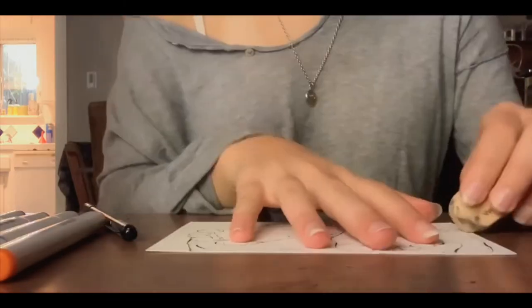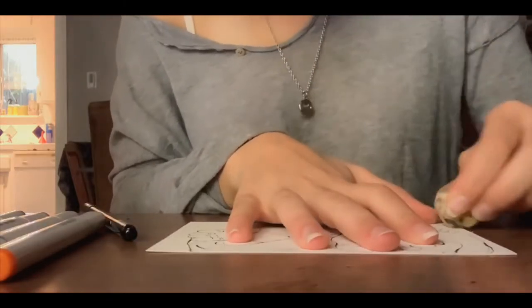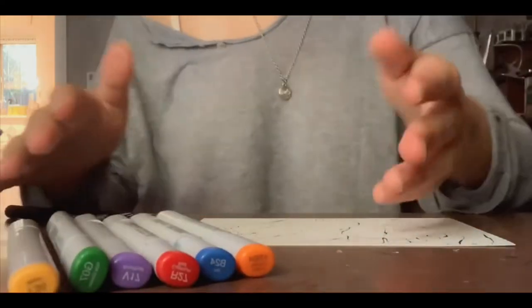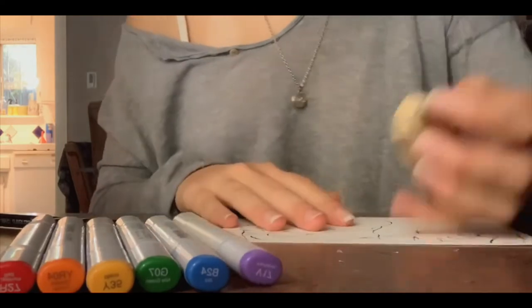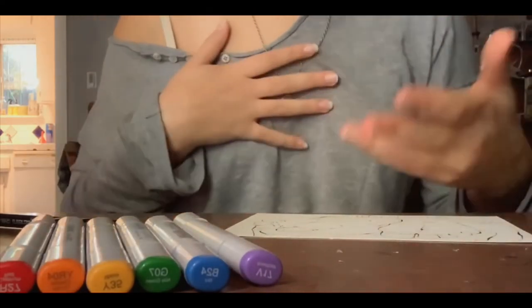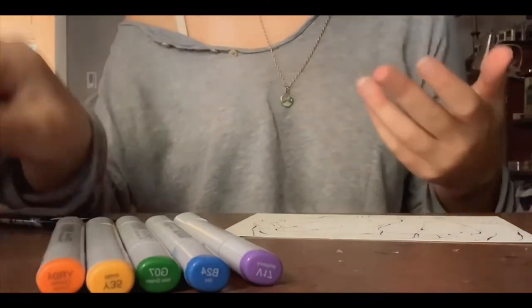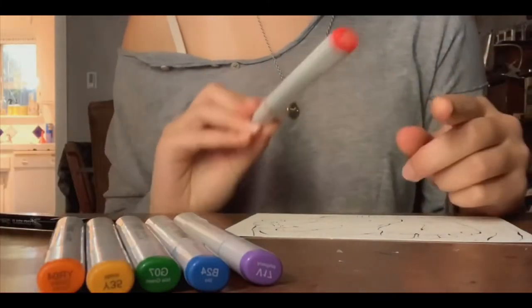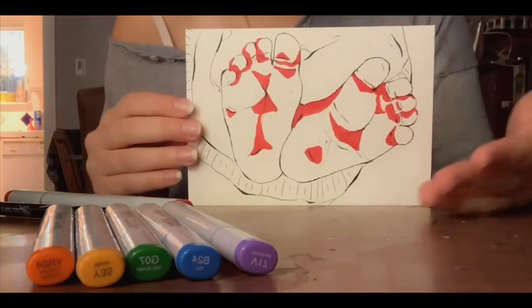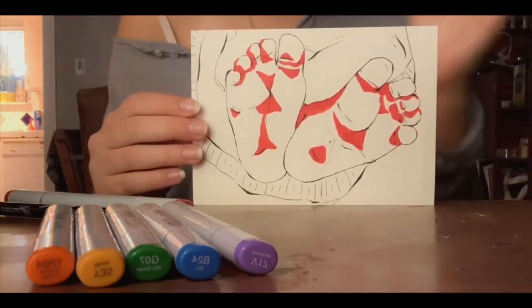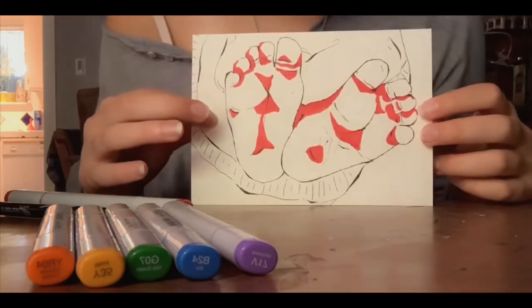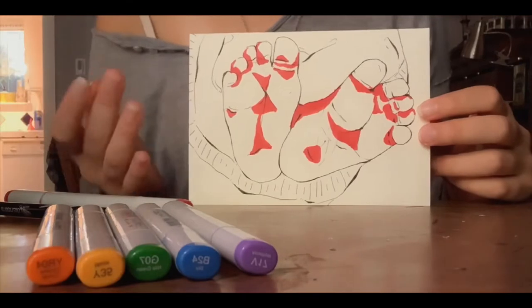We're going to erase our underlying pencil marks. Now we're going to introduce colors, and I'm going to start with the warmest area or the area where there would be the most heat, and with that I'll use red. I'm not sure why, but this is where I expect there to be most heat on feet, and so that's where I drew most of the red.